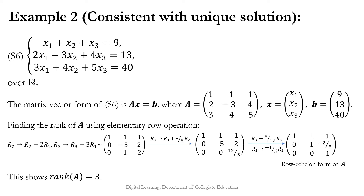Here is another example of a consistent system with a unique solution — system S6: x₁ + x₂ + x₃ = 9, 2x₁ − 3x₂ + 4x₃ = 13, and 3x₁ + 4x₂ + 5x₃ = 40 over the real field. The matrix-vector form is Ax = b where A is the 3×3 matrix with entries 1, 1, 1; 2, −3, 4; 3, 4, 5; x is a 3×1 vector with entries x₁, x₂, x₃; and b is a 3×1 vector with entries 9, 13, 40.